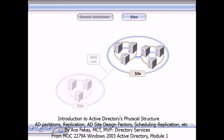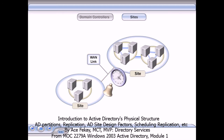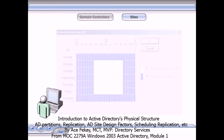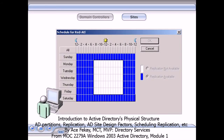You create sites to optimize the use of bandwidth between physically separated domain controllers. You can configure domain controllers in separate sites, which may be linked by slower communications, to communicate only at scheduled times. You typically schedule this replication traffic when it has minimal impact on other network traffic.